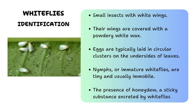Identifying whiteflies is relatively straightforward due to their distinctive appearance. These small insects typically measure around one to three millimeters in length. They have powdery white wings and bodies that resemble tiny moths. When disturbed, they often flutter around the underside of plant leaves in a characteristic manner. Whiteflies also leave behind small waxy yellowish eggs on the undersides of leaves, which can aid in their identification.